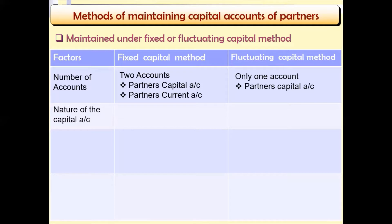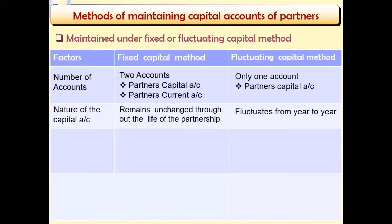Secondly, the nature of the capital account. In the fixed capital method, the capital account remains unchanged throughout the life of the partnership. Or, if the capital account is changed, it is changed with long-term items — for example, additional capital of the partners or permanent withdrawal of capital by the partners. But in the fluctuating capital method, the partners' capital balance fluctuates from year to year.